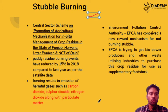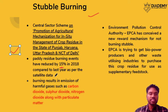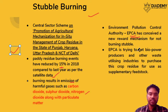The next topic is stubble burning. The centre has launched a scheme for promoting agricultural mechanization for in-situ management of crop residue in states like NCT, Punjab, Haryana, and Uttar Pradesh. Farmers there tend to burn crop residue, causing high levels of smog in NCT and surrounding areas, leading to severe air pollution. Stubble burning was reduced by 15% in 2018 compared to the previous year, measured using satellite data.